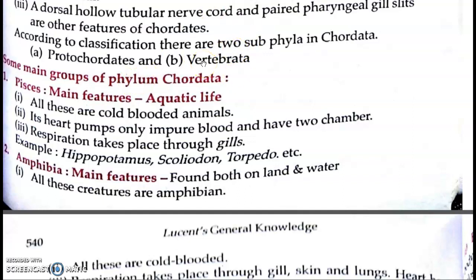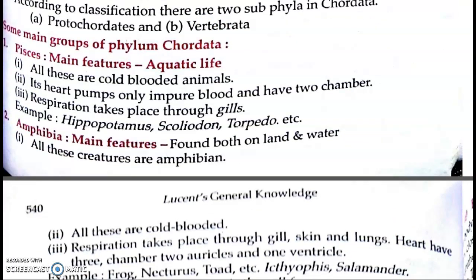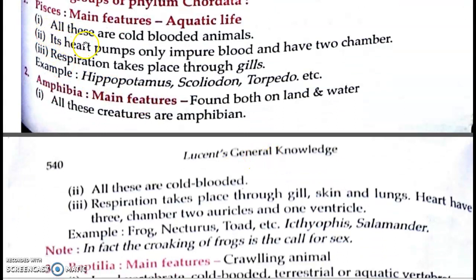Now come to Vertebrata. Vertebrata mein aise animals hote hain jinke andar vertebra hoti hai — jaise hamaari body ki spine mein vertebrae hoti hain. Vertebrata ke groups ki baat karte hain: Pisces sabse pehle aata hai. Pisces ka matlab hota hai fishes. Main feature: Aquatic life — paani mein rehte hain. All these are cold-blooded animals — hamaari tarah warm-blooded nahin hote. Inka body temperature environment ke according change hota rehta hai, isliye inhe cold-blooded animals kehte hain.